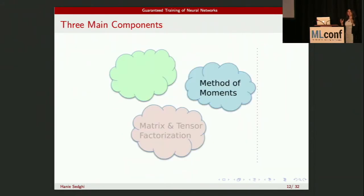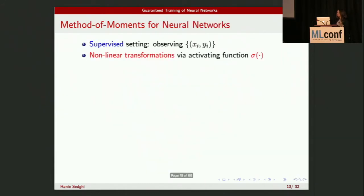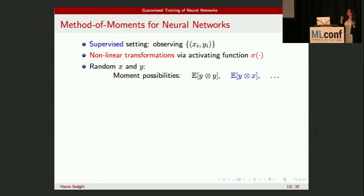Now, if you find this tensor that has the relevant information relating to the neural network, you're done. But what is the tensor? That's where the method of moments comes in. We are in a supervised setting — we have input and corresponding labels, and we know the input has passed through a nonlinear transformation in the neural network. There are different possible moments: a moment is essentially looking at some products between label and label, label and input, or input itself. The question is: what moment is actually useful?